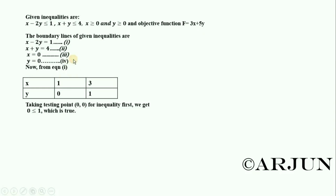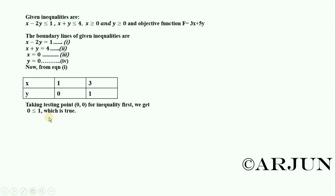For linear programming, the origin is at (0, 0). We use a testing point at the origin. Taking testing point (0, 0) for the first inequality: substituting x equals 0 and y equals 0, we get 0 minus 2 times 0 equals 0. Since 0 is less than or equal to 1, which is true, this statement is true.